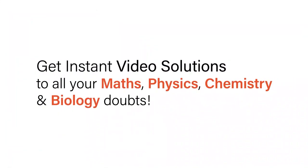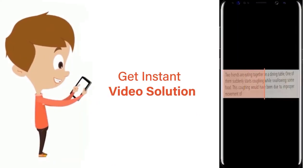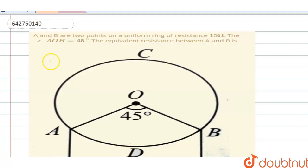With Doubtnet, get instant video solutions to all your maths, physics, chemistry, and biology doubts. Just click the image of the question, crop it, and get an instant video solution. Download Doubtnet app today. A and B are two points